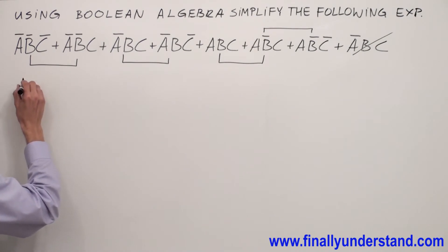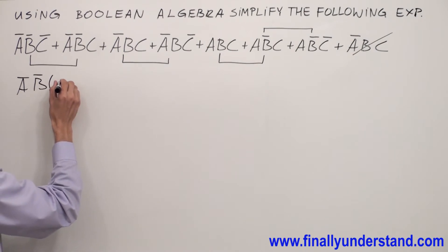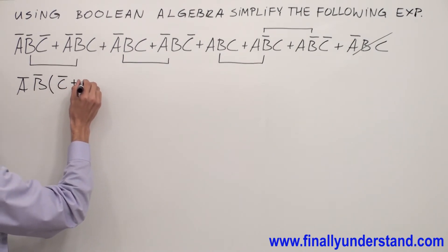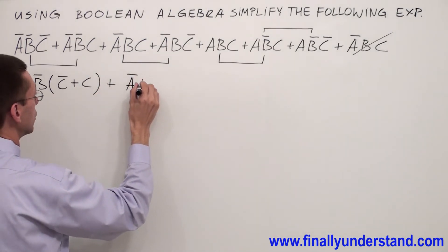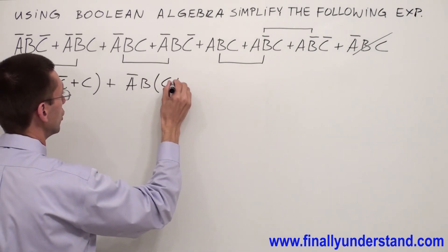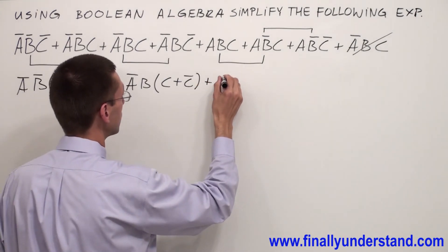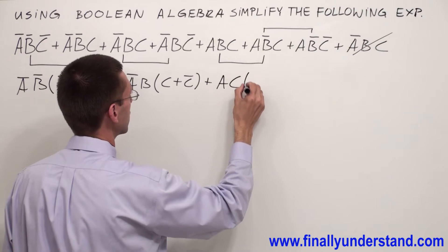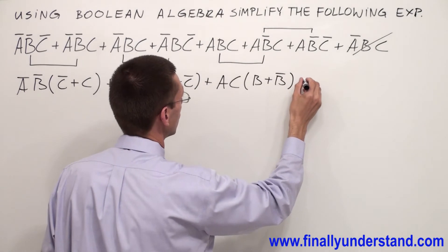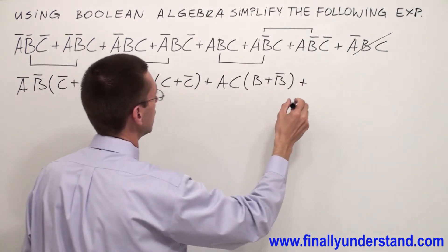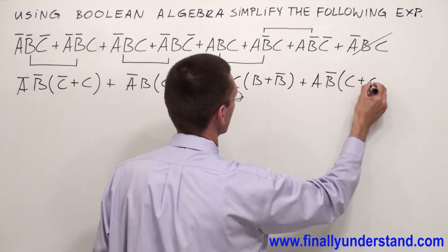I'm going to factorize. A'B' in parentheses — I'm going to have C' or C, or A'B inside of the parentheses; C or C' or A; C inside of the parentheses; B or B' or A; B', C or C'.